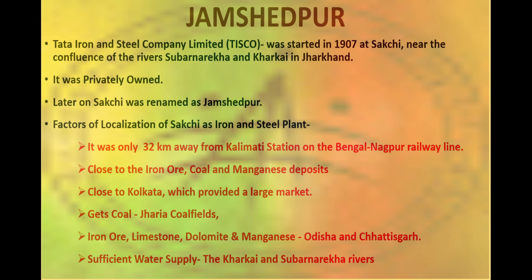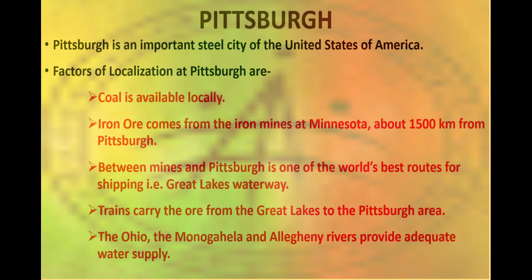TISCO was started in 1907 at Sakchi, near the confluence of Subarnarekha and Kharkai rivers in Jharkhand. Later Sakchi was renamed as Jamshedpur. After independence, the government took initiative and set up several iron and steel plants in India. Pittsburgh is an important steel city of the United States of America. The Pittsburgh area has many factories other than steel mills, producing railroad equipment, heavy machinery, and rails, etc.